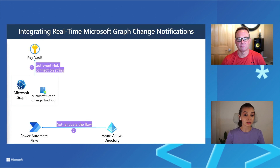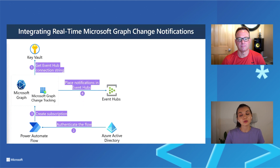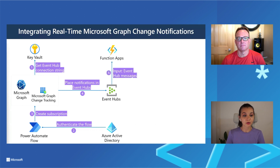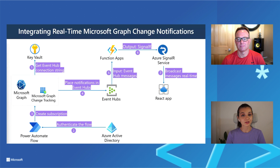Before any Graph call, we need authentication — so the second step is authenticating the flow with Azure Active Directory and creating the subscription by calling the Graph subscription endpoint. After that, we start getting all changes from the related data source. For us, it's presence data: if someone changes their status in our tenant, we get notifications placed into Event Hubs. From there, Azure Functions delivers the notifications into our React app, with Event Hub messages as input and SignalR as output — broadcasting messages real-time directly in our React app.